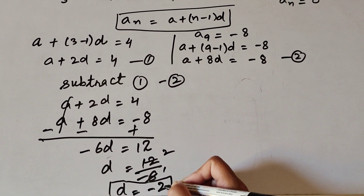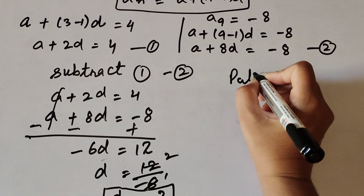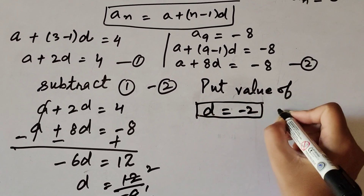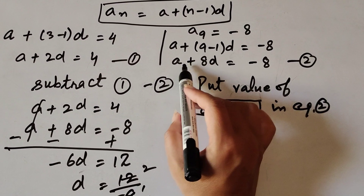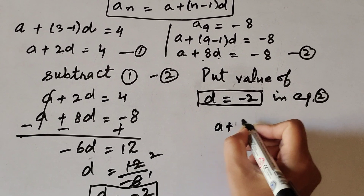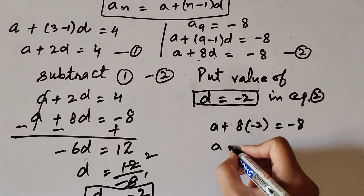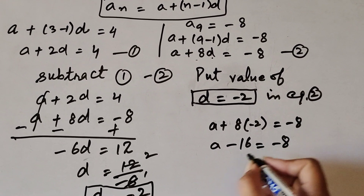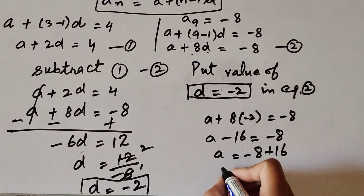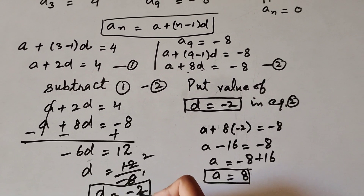So d equals minus 2. Now we put the value of d equals minus 2 into equation number 2 to find the value of a. Substituting: a plus 8 times (minus 2) equals minus 8, so a minus 16 equals minus 8. Transposing minus 16 to the right hand side gives a plus 16, so a equals 8. The first term of the AP is 8 and the common difference d is minus 2.